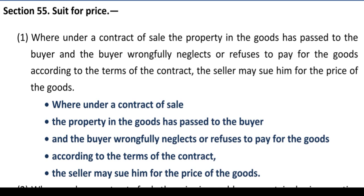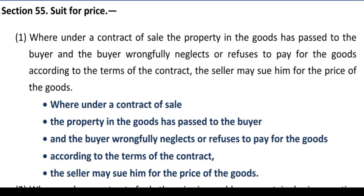The provisions of Section 55: where under a contract of sale the property in goods has passed to the buyer — meaning the ownership of goods has been passed to the buyer. The possession may be with the buyer or maybe with the seller, but we are talking here about the property in goods, meaning ownership has passed to the buyer. And the buyer wrongfully neglects or refuses to pay for those goods as per the terms of a contract, then the seller may sue him for the price of the goods.